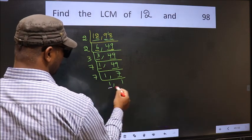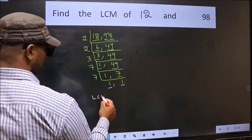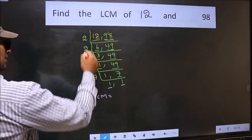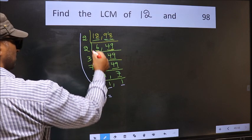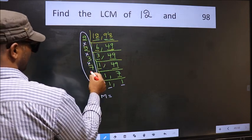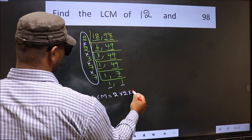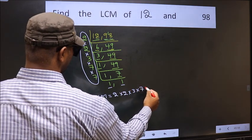So we got 1 in both the places. So our LCM is the product of these numbers. That is 2 into 2 into 3 into 7 into 7.